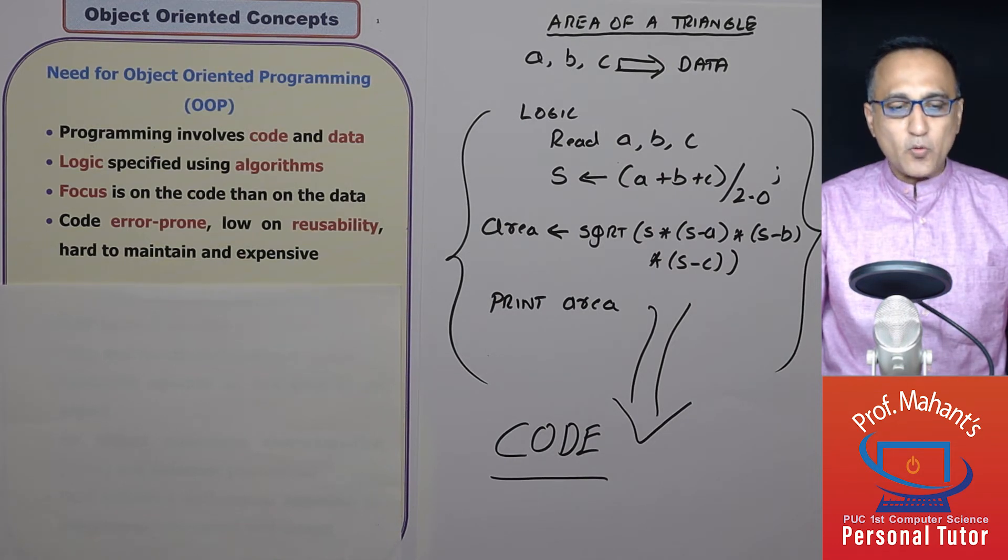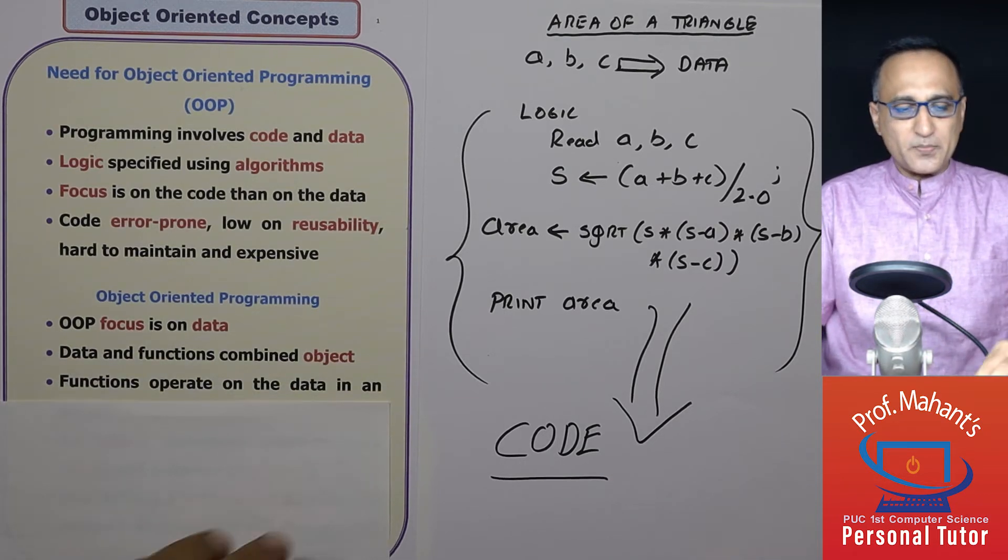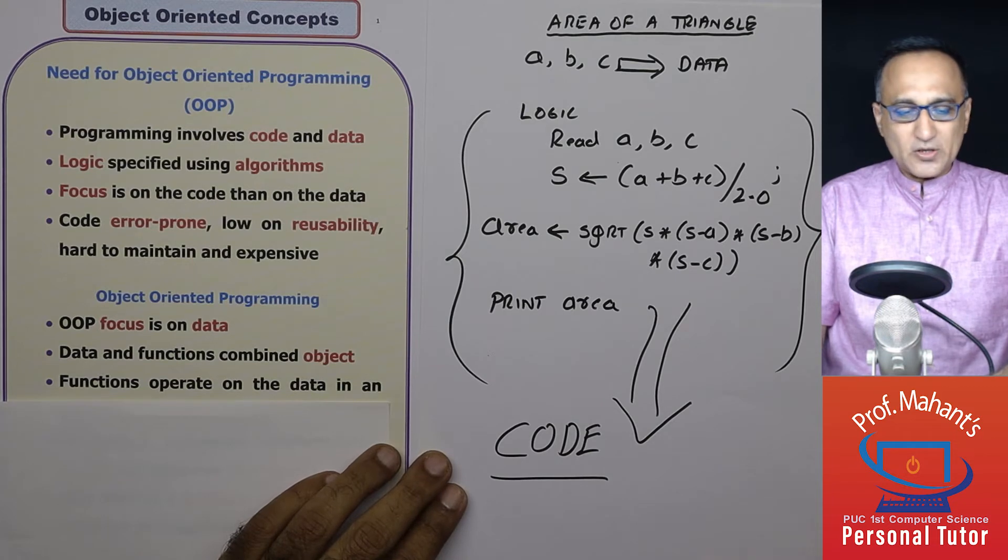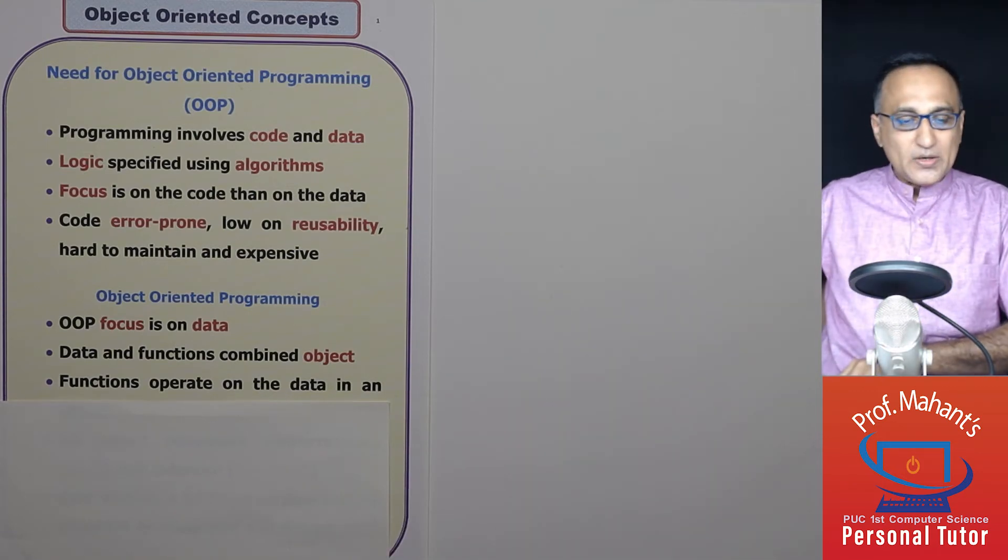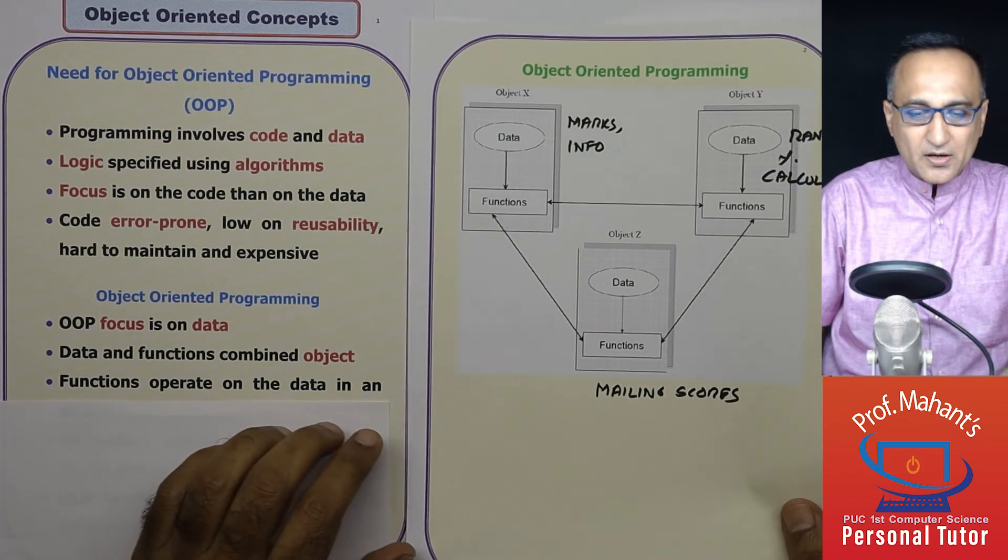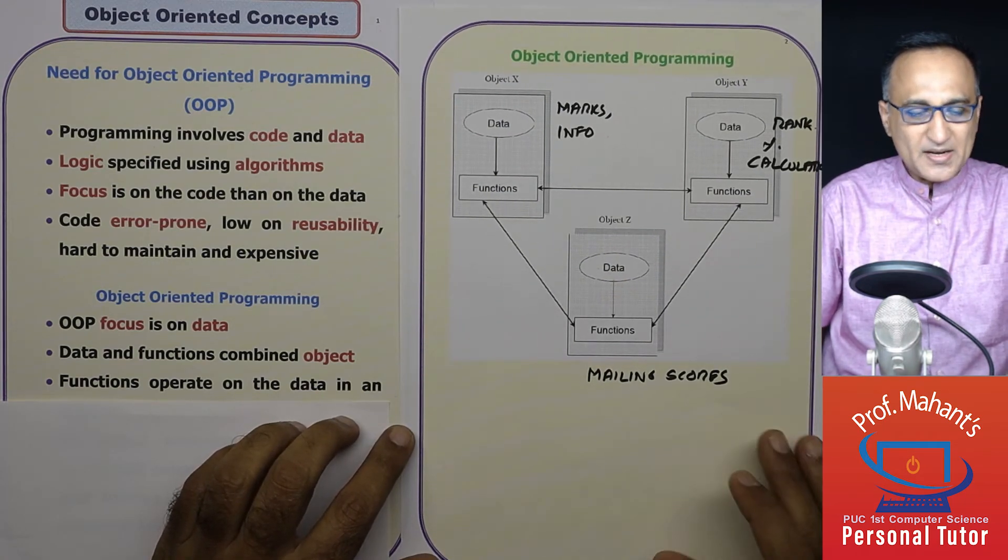So the conventional way of writing code emphasized the code over the data. Now, in order to overcome the shortcoming of the conventional way of programming, object oriented programming came into picture. In object oriented programming, the focus is both on data and code. So what happens is the data and code is combined into a single grouping called the object.